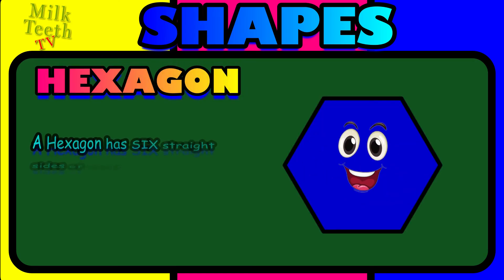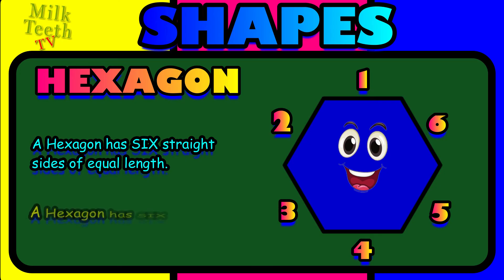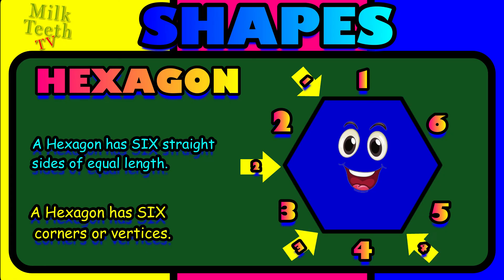A hexagon has six straight sides of equal length: one, two, three, four, five and six. A hexagon has six corners or vertices: one, two, three, four, five and six.